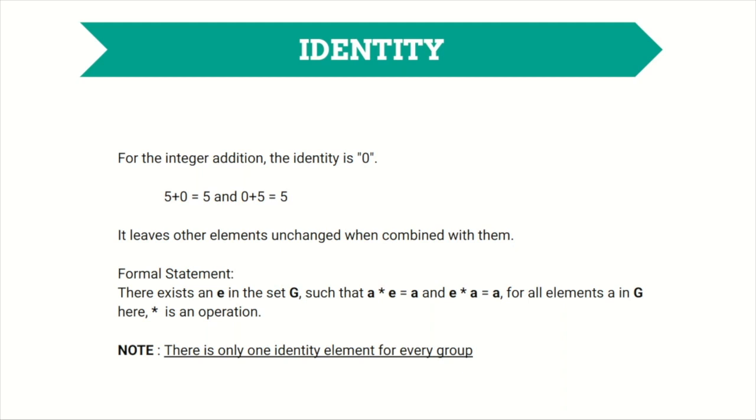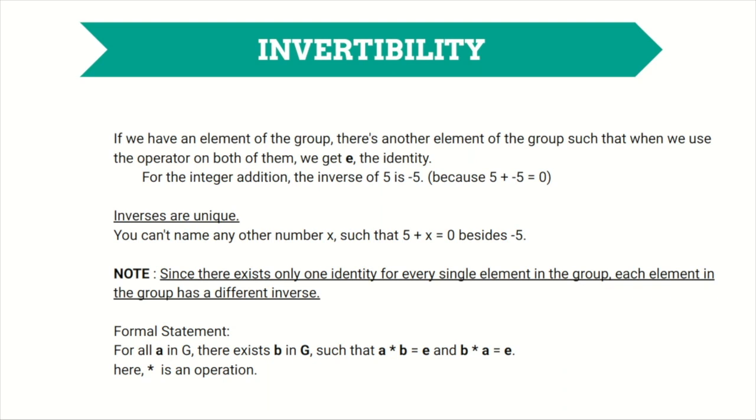Number four: invertibility. If we have an element of the group, there is another element of the group such that when we use operator on both of them, we get e, the identity. For the integers and addition, the inverse of five is minus five, because five plus minus five equals zero. Inverses are unique. You cannot name any other number x such that five plus x equals zero besides minus five. Make a note that while there exists only one identity for every single element in the group, each element in a group have different inverses.